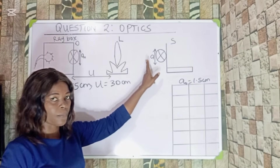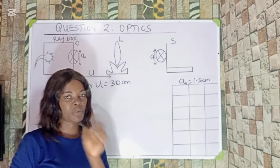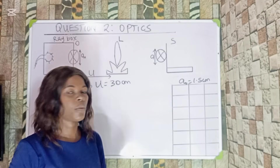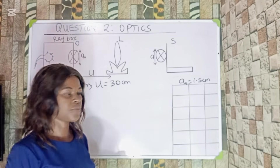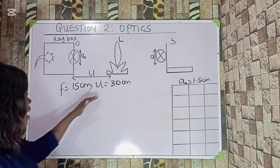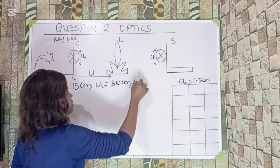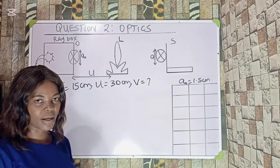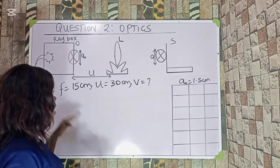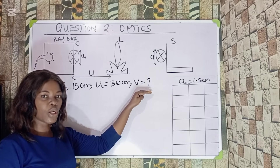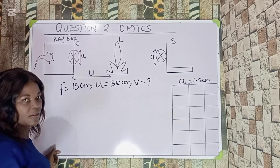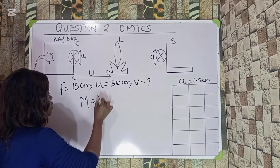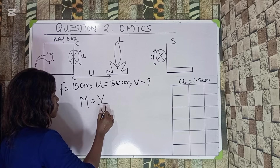When the image is formed, you use a ruler to measure it, but you can actually obtain these values using the lens formula and magnification formula. If f and u are known, you can get the image distance v using the lens formula. Then use the magnification formula: magnification equals image distance over object distance.